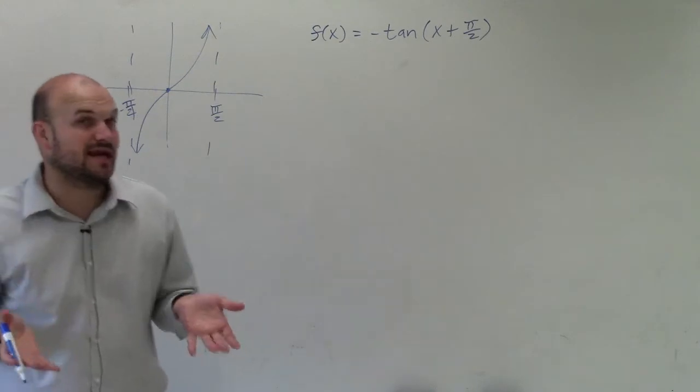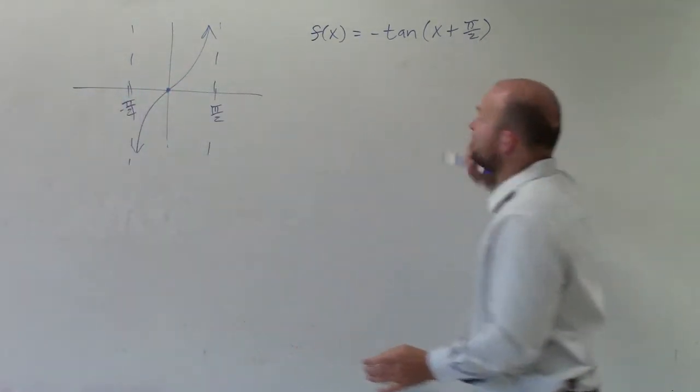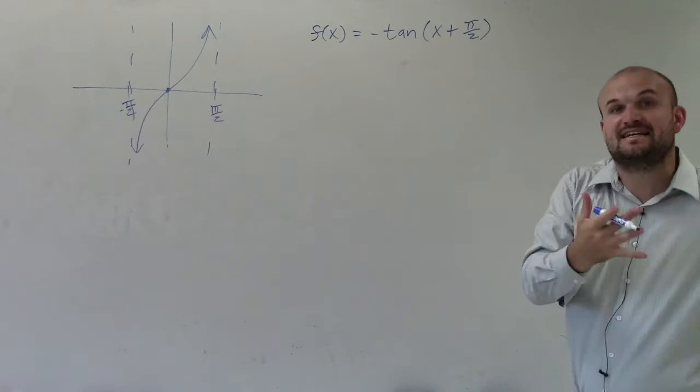So that's what the parent graph looks like. However, we have some transformations. We have this negative symbol, and we have this plus pi half. So how is that affecting our graph?